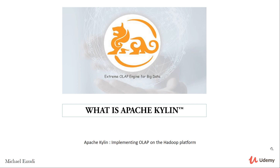According to the engineers at eBay, the largest use case for Kylin is the analysis of over 12 billion source records, generating over 14 terabyte cubes. Its 90th percentile query latency is less than 5 seconds. Now that is impressive.